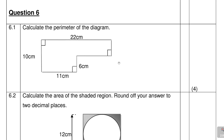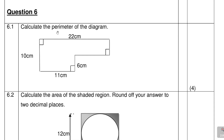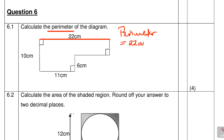The first question says calculate the perimeter of the diagram. When you're looking at the perimeter of a diagram, it is the distance around the shape. So we write: Perimeter = 22 centimeters, plus we move on to the next side.